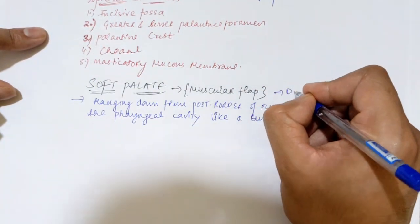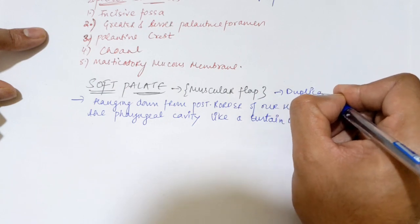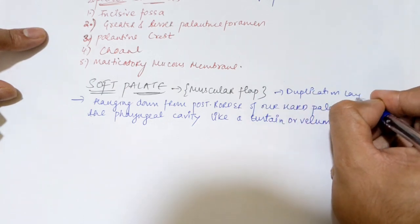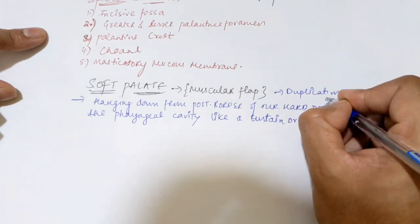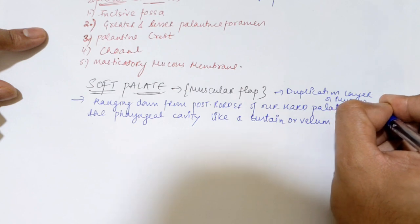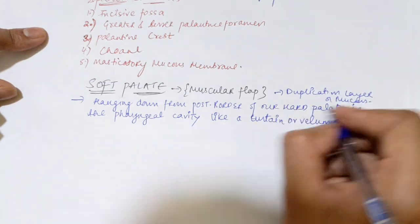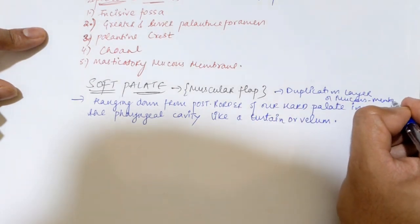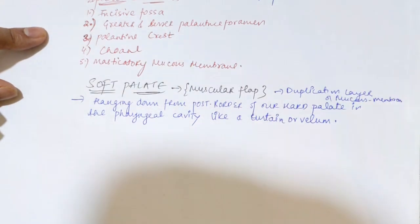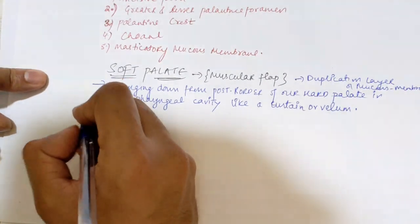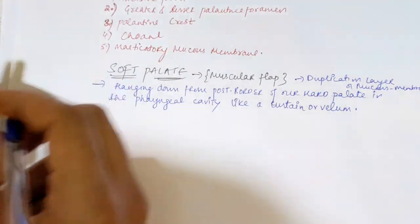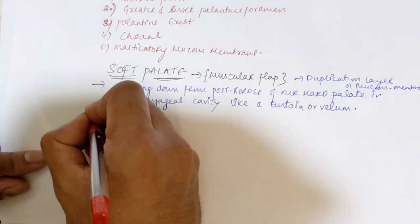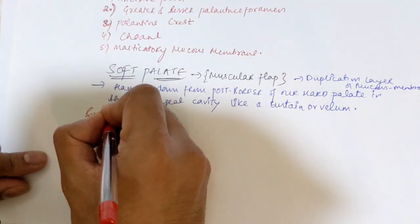So the soft palate is a muscular flap, a muscular organ, which is formed by a duplication layer of our mucous membrane and our palatine aponeurosis.